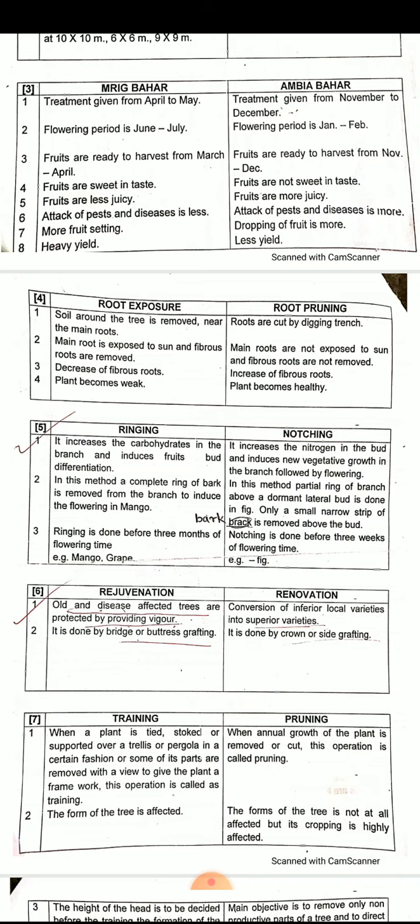In renovation, inferior local varieties are converted into superior varieties. In rejuvenation, it is done by bridge or buttress grafting. In renovation, it is done by crown or side grafting.